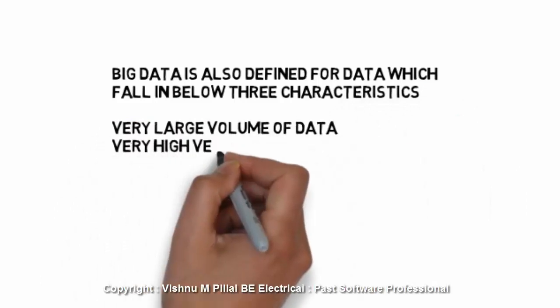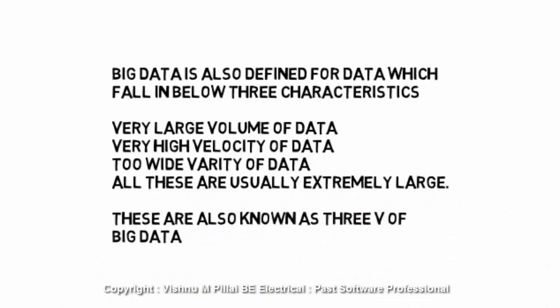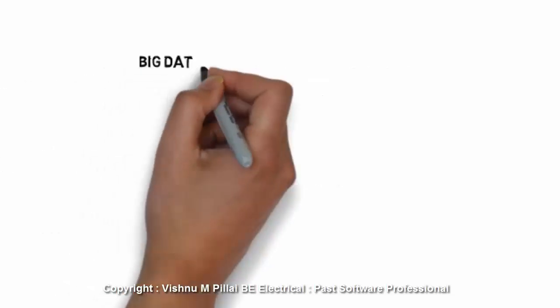Big data is defined for data which fall into three categories: very large volume, very high velocity, and too wide variety. These are usually extremely large—extreme volume of data, extreme velocity of creation, and extreme variety of different types. These are known as the three V's of big data. When data has these three properties, you can call it big data.